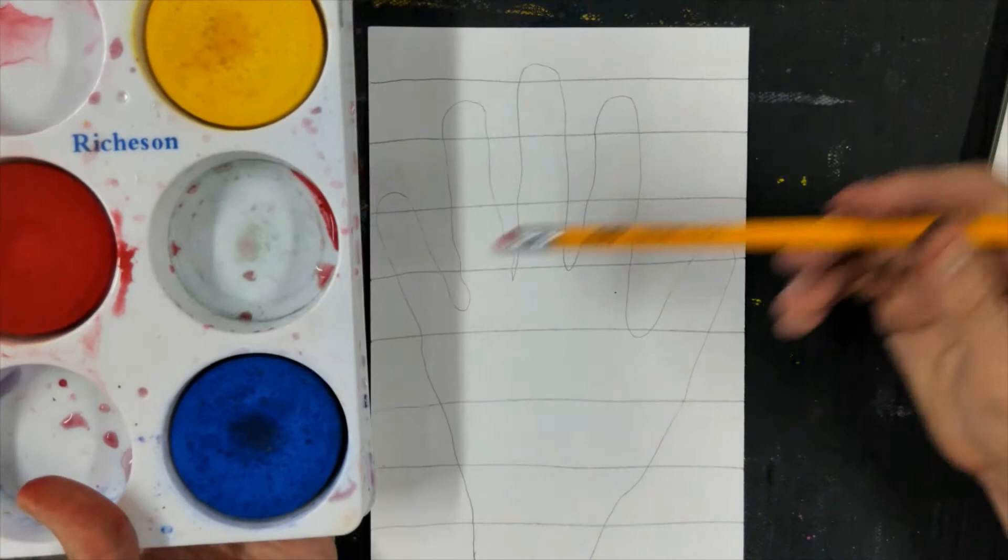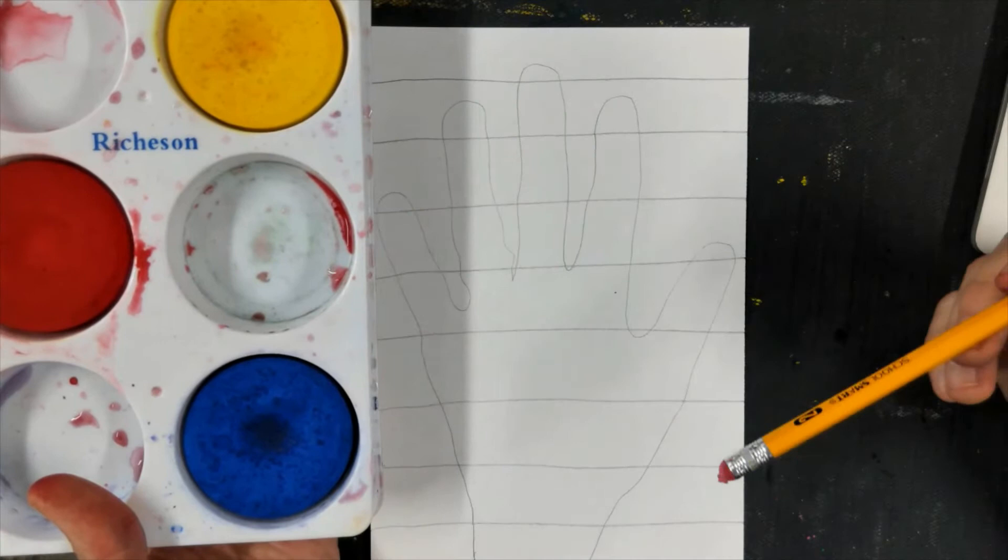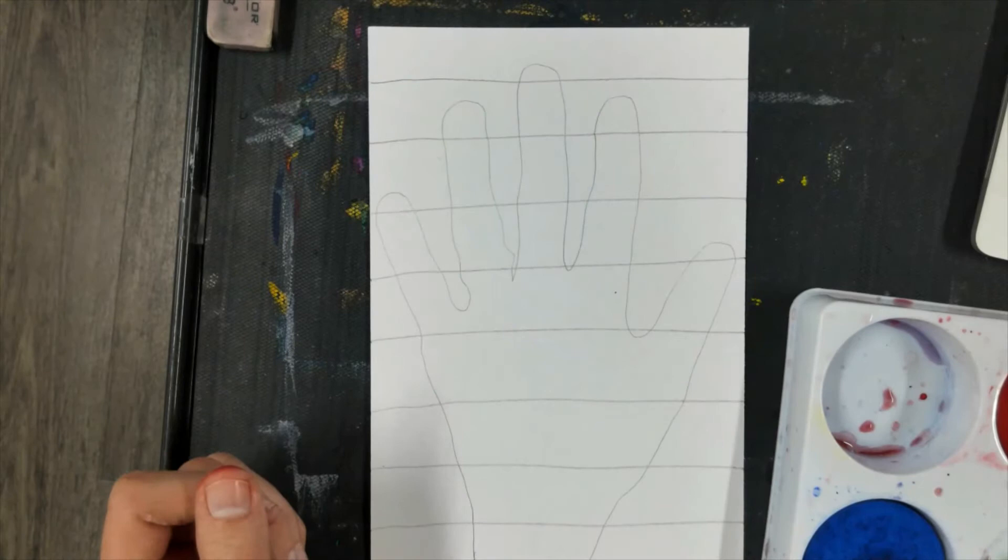So you have lots of options there for inside the hand. For outside the hand you have blue or you can mix blue and yellow to make green or you can mix blue and red to make purple for the outside. So I'm going to do this on time lapse to save us some time and let's see how it goes.